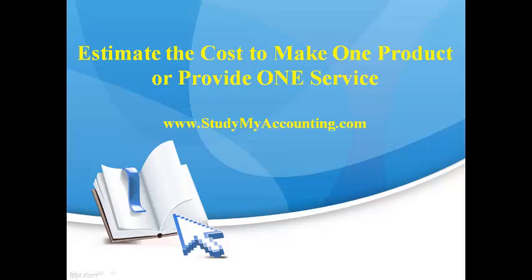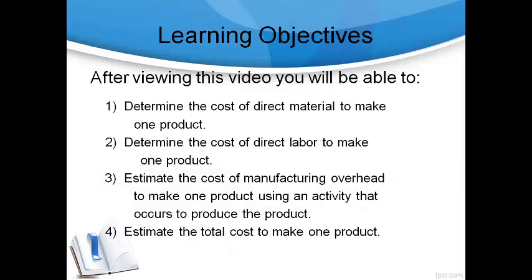Hello and welcome to a short discussion on how to determine and document the cost to make one product. After viewing this video, you will be able to quantify the amount of direct materials and direct labor required to make one product. Direct material can be measured and direct labor can be timed. Manufacturing overhead is a product cost that cannot be directly measured or watched as one product is made. The cost required to make one product is very important to understanding and managing resources and pricing the product.